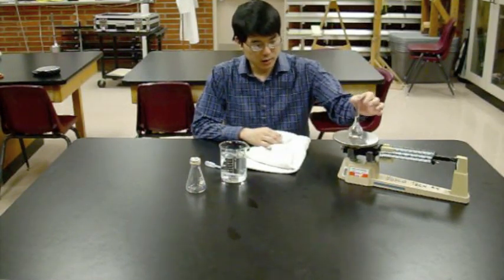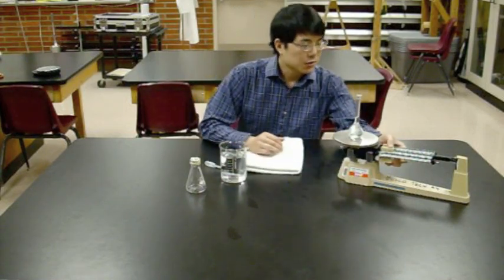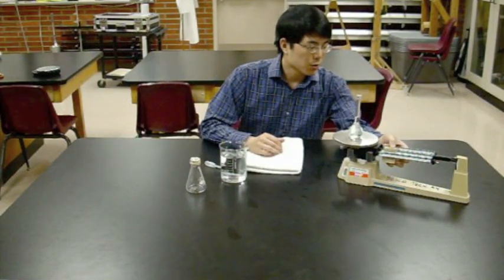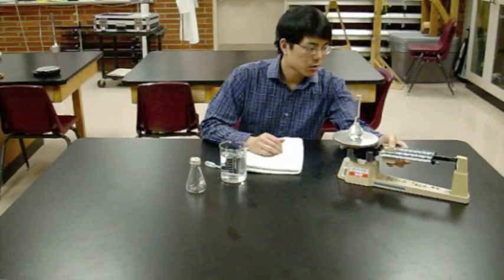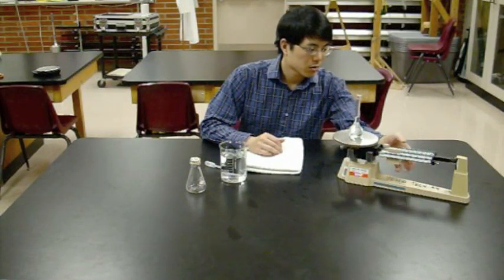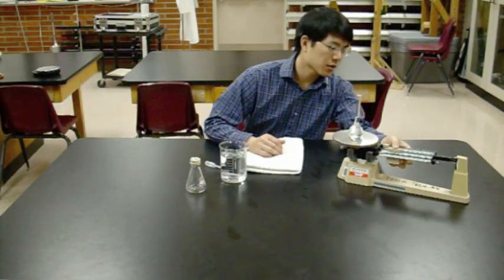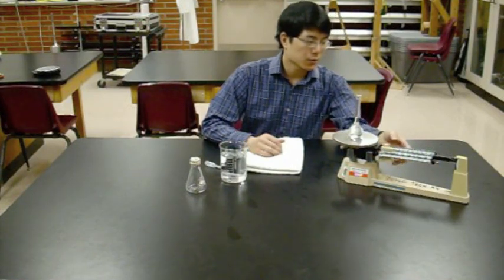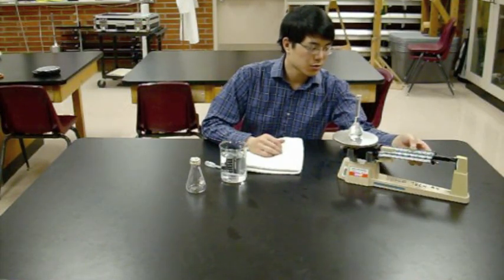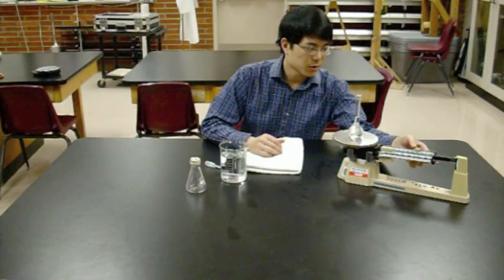And then put it back on the triple beam balance. Again, as always, start with the heaviest slider. It's still tipping the scales at the first notch on the heaviest slider. So let's try the medium slider.